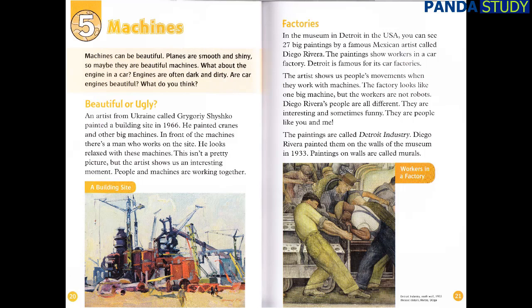Machines can be beautiful. Planes are smooth and shiny, so maybe they are beautiful machines. What about the engine in a car? Engines are often dark and dirty. An artist from Ukraine called Grigory Shysko painted a building site in 1966. He painted cranes and other big machines. In front of the machines, there's a man who works on the site — he looks relaxed with these machines. This isn't a pretty picture, but the artist shows us an interesting moment: people and machines are working together.